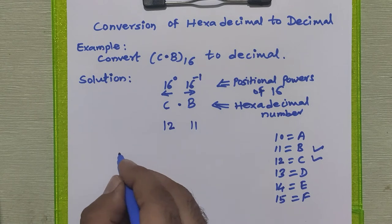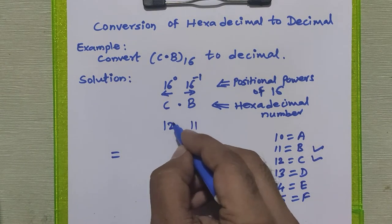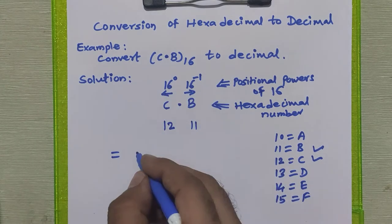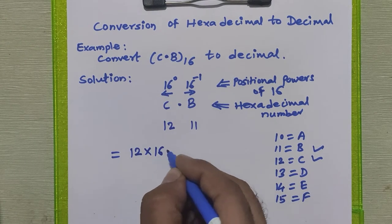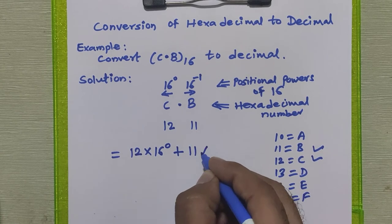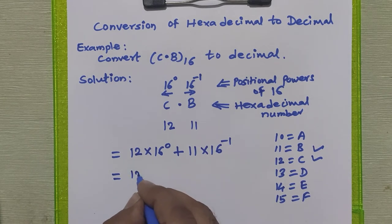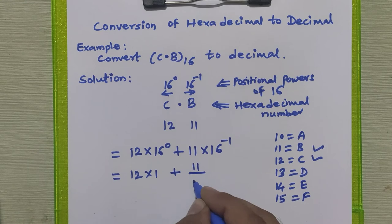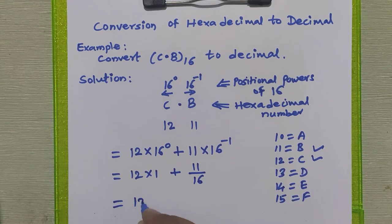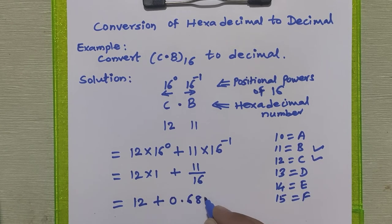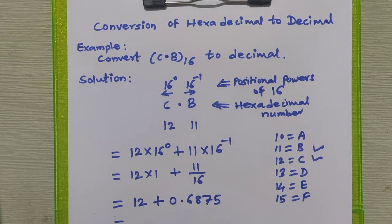To get our decimal equivalent, we have to multiply each digit by its positional power of 16. So it becomes 12 into 16 raise to 0, plus 11 into 16 raise to minus 1. This gives 12 into 1, plus 11 divided by 16, which is 0.6875. Adding both gives us the decimal equivalent.